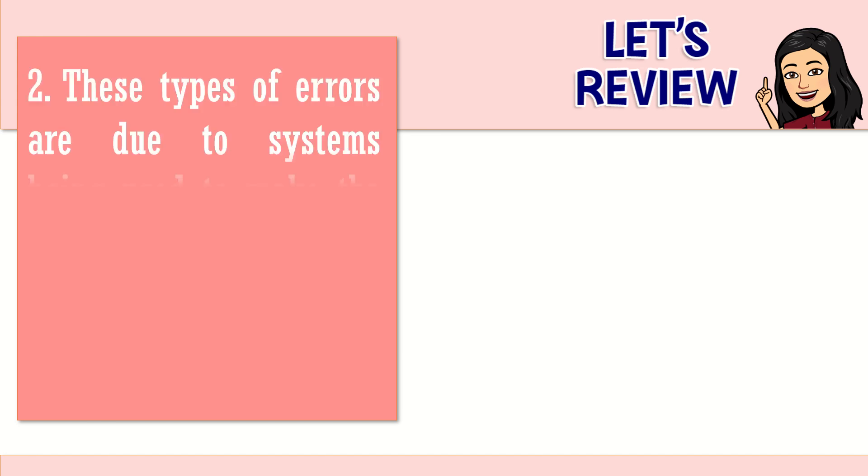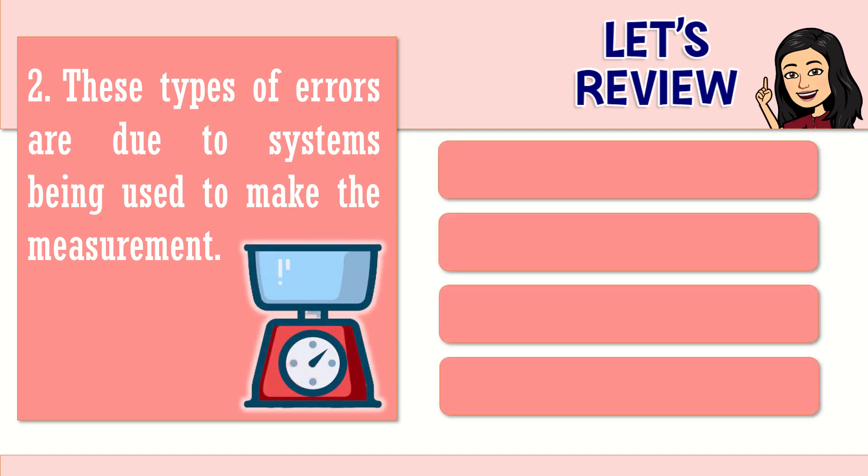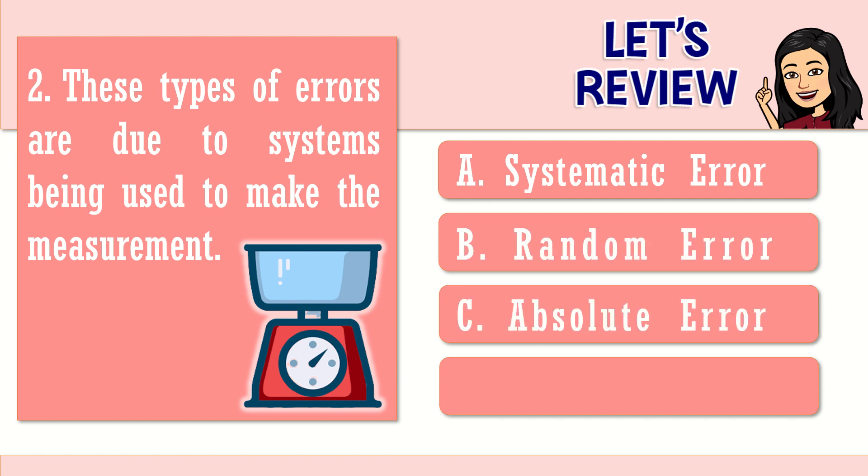Let's proceed to question number 2. These types of errors are due to systems being used to make the measurement. A. Systematic error. B. Random error. C. Absolute error. Or letter D. System error. You've got 5 seconds. Your time is up. The right answer is letter A. Systematic error. Excellent. You are correct. When we say systematic error, it's being caused by the measuring tool itself or the system itself.